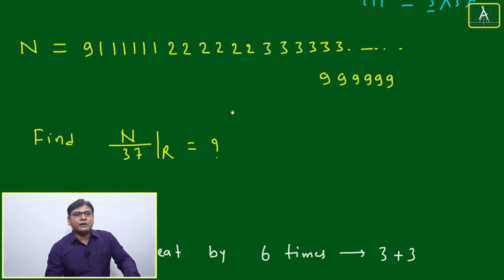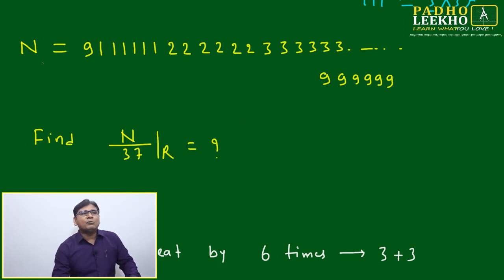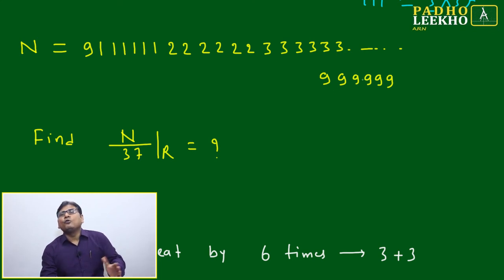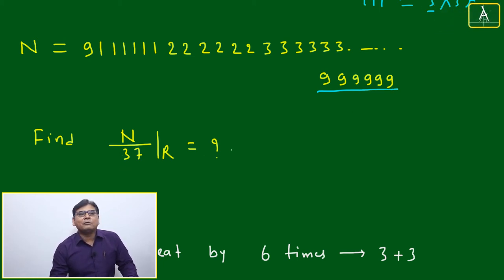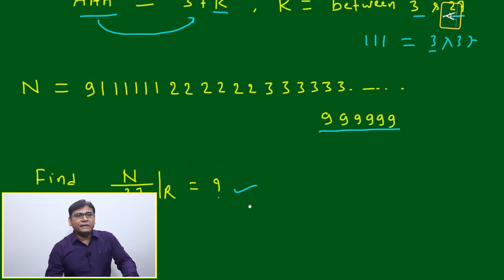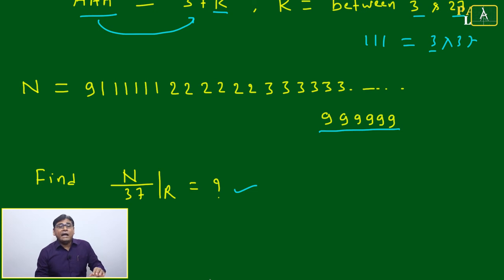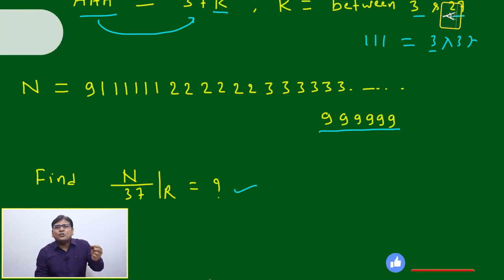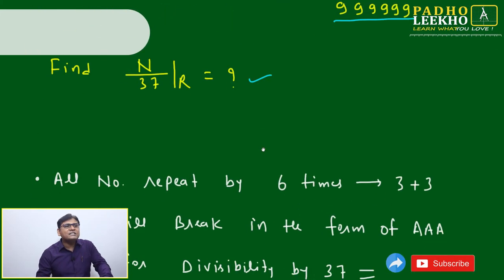Now let us take a number in series format and understand its application. The number is: 9, followed by 111111 (1 repeated 6 times), 222222 (2 repeated 6 times), 333333 (3 repeated 6 times), and continuing with 444444, 555555, and so on up to 999999. The question asks: what is the remainder when this number is divided by 37? Looking at it, the question seems very complicated — you might think it cannot be solved in an exam, perhaps taking 5 or 10 minutes. But with a key observation, we can break this into very easy parts and solve it quickly.